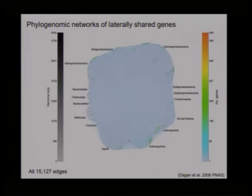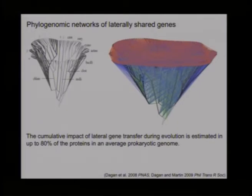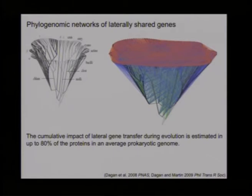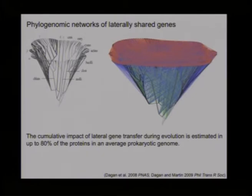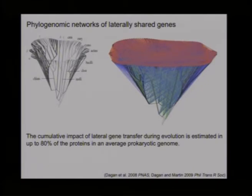We can extract interesting numbers from this picture. By tracking gene families as they are vertically inherited and then laterally transferred, we estimate the cumulative impact of lateral gene transfer during evolution reaches up to 80% of proteins in an average prokaryotic genome. This might seem extreme, but estimates for recent transfers in microbial genomes range between 14 and 18%; taking 14% over the full breadth of evolutionary time, 80% of proteins affected over time doesn't seem that high.